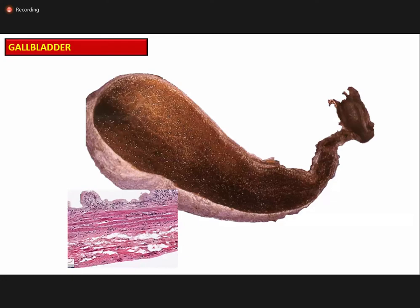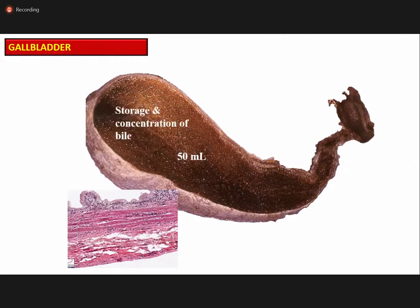The gallbladder is a thin elongated sac about 8 centimeters long and about 50 mL in volume. It is present in a fossa on the inferior surface of the liver between the right and quadrate lobes. It develops from the same foregut diverticulum that gives rise to the liver. It has the fundus, body, and neck, and is attached to the common hepatic duct through the cystic duct, which is 3 centimeters in length. Its function is storage, concentration, and release of bile.